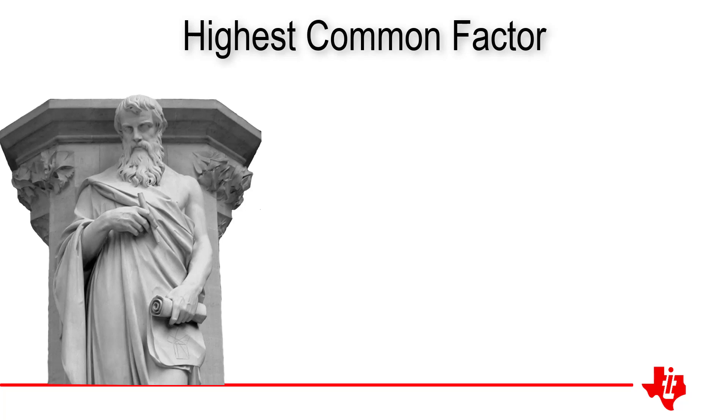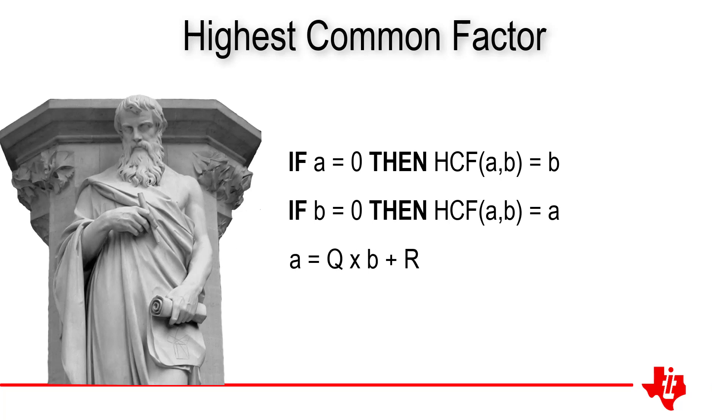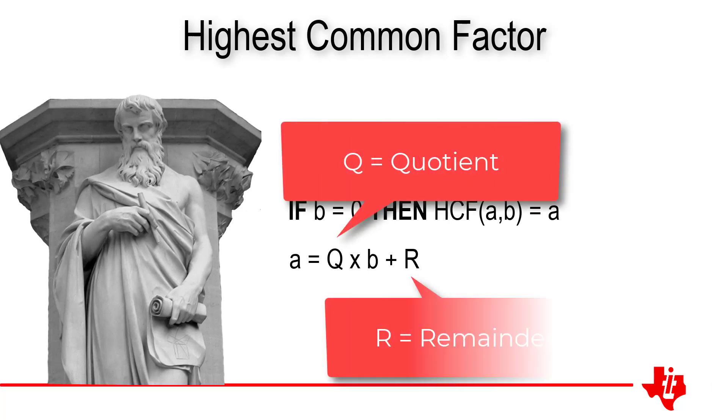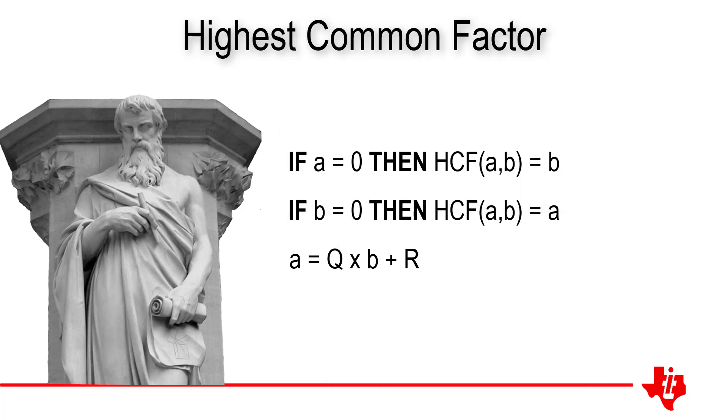Euclid's algorithm works as follows. If a equals 0, then the highest common factor of a and b is b. If b equals 0, the highest common factor of a and b is a. That all seems relatively straightforward. The next step, a equals q times b plus r, where q is the quotient and r is the remainder. In other words, if you divide a by b, r is the leftover. The highest common factor of a and b is equal to the highest common factor of b and r.